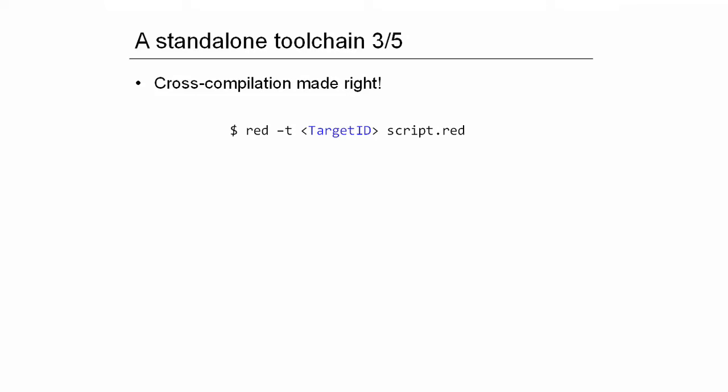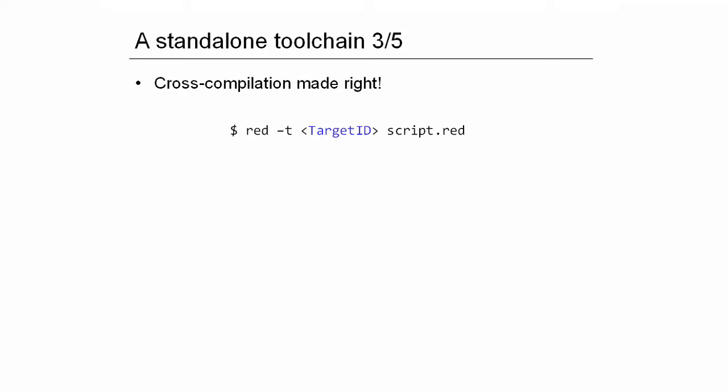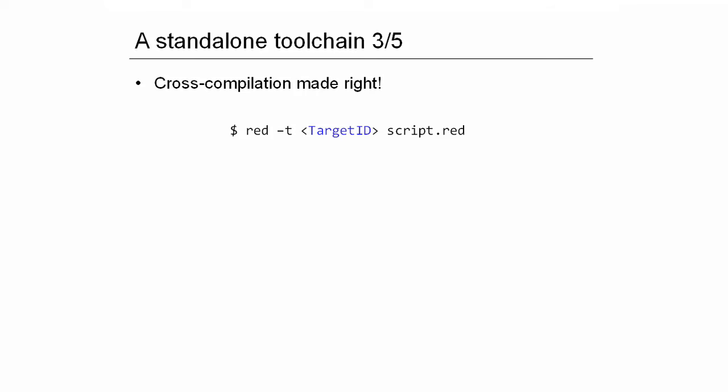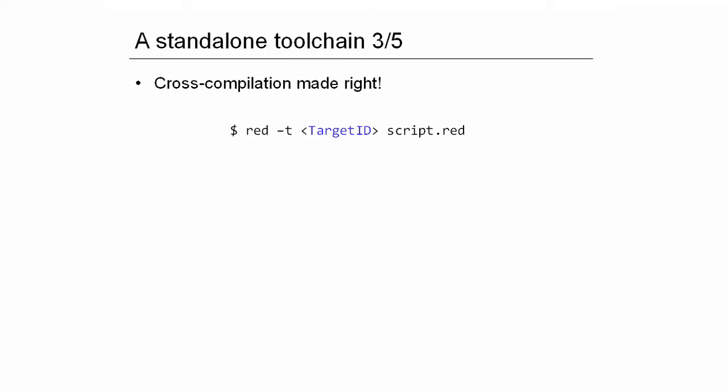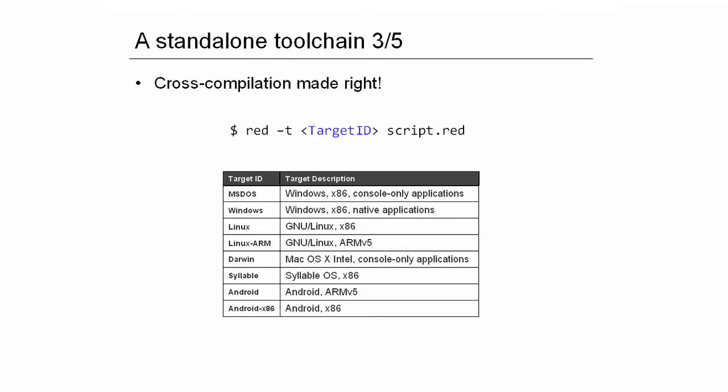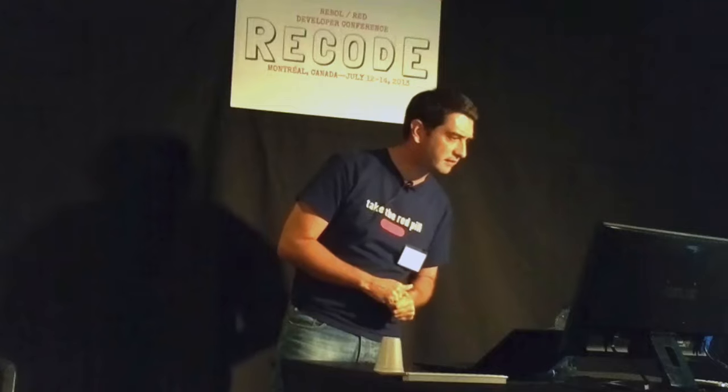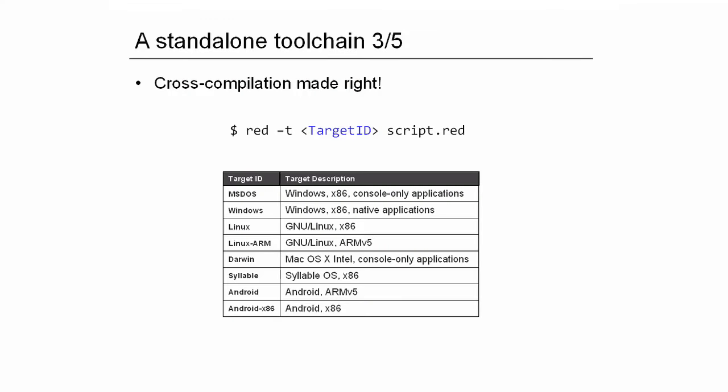RED is able to cross-compile to other systems — from any system to any other. It can compile from any platform where Rebol runs to any other platform. To achieve that, you don't need a tutorial or searching the net — you simply pass a minus-T command and a target ID, and that's all. A target ID is just an entry in a configuration file, a simple Red dialect, where we list some options for the target platform. Currently we have about 8 targets, so we can cross-compile from any one to any other, as long as Rebol runs on the source platform, supporting mainly x86 and ARM-based platforms.